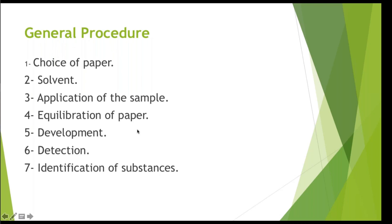Now we come to the general procedure in paper chromatography. The various steps to consider are: first, choice of paper (the support material from which the technique gets its name); second, solvent selection; third, application of the sample; fourth, equilibration of paper; fifth, development; sixth, detection; and finally, identification of substances.